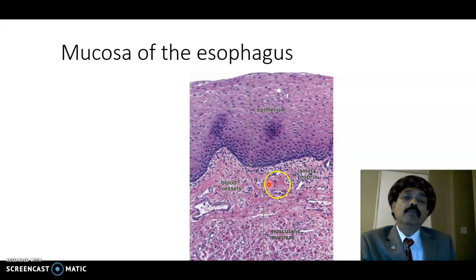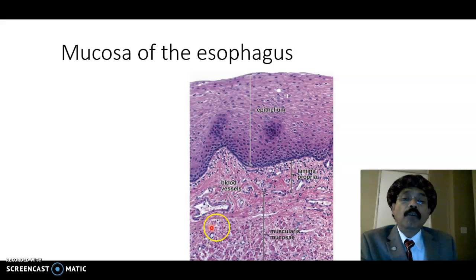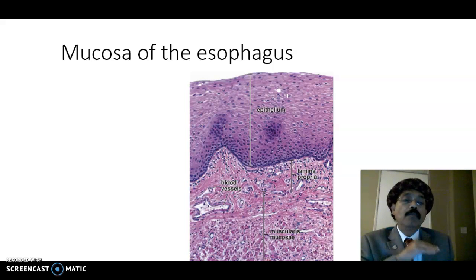The lamina propria is a loose connective tissue composed of cells, fibers, and ground substance. Then we get the muscularis mucosa — the longitudinal muscle layer. Underneath the muscularis mucosa we get the submucosa, and then the muscularis externa.